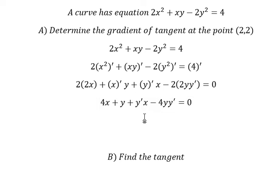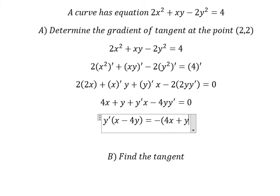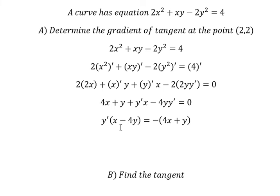We do the factorization and put the 4x plus y on the right side. Next we divide both sides by x minus 4y.